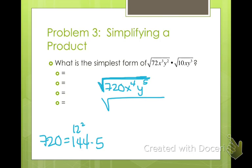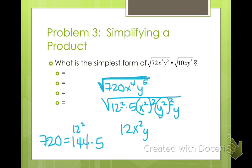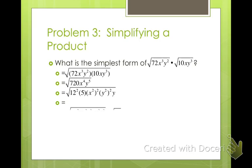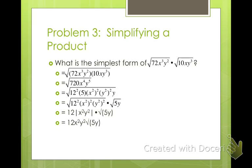So I rewrite this as 12 squared times 5, then x squared squared, y squared squared, and y, to account for all the x's and y's with powers for easy simplification. I take out 12, x squared, y squared, and I'm left with 5y inside. Do we need absolute values? X squared and y squared are always positive, so we're good. The answer is 12x²y²√(5y).